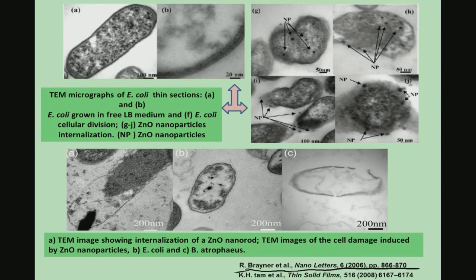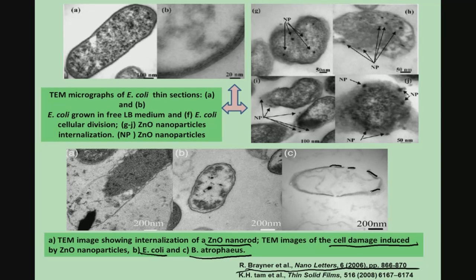Similarly, another team showed TEM images of zinc oxide nanorods and thin slices of bacteria — particularly E. coli and Bacillus atrophaeus — demonstrating signs of membrane disintegrity, with more poration in the membrane. Once membrane integrity is lost, bacteria cannot survive; essentially all cytoplasmic material and organelles can come out, causing bacterial death.